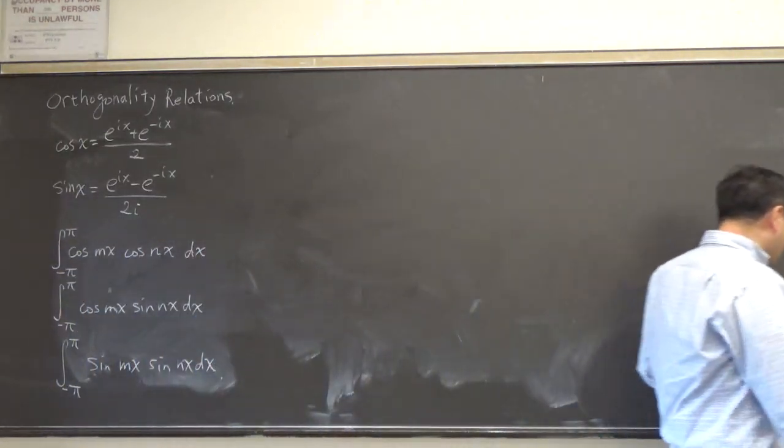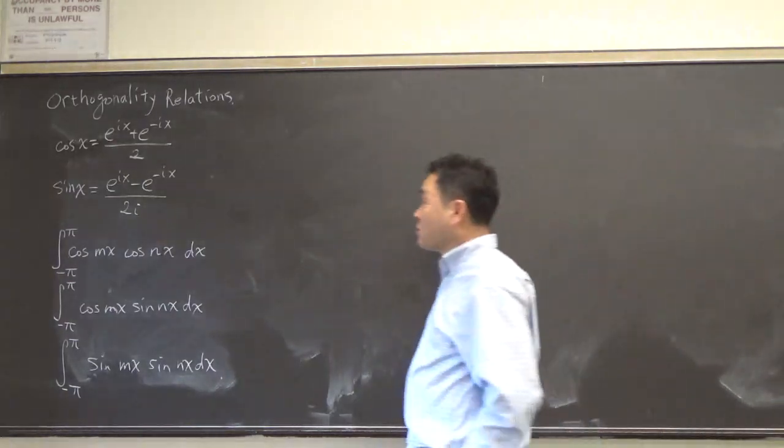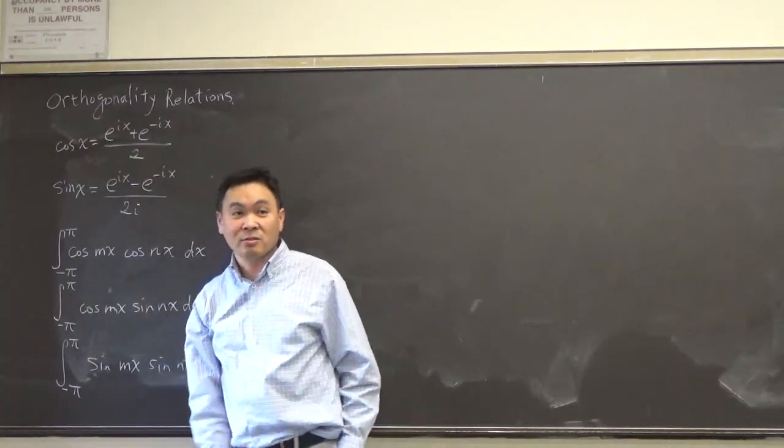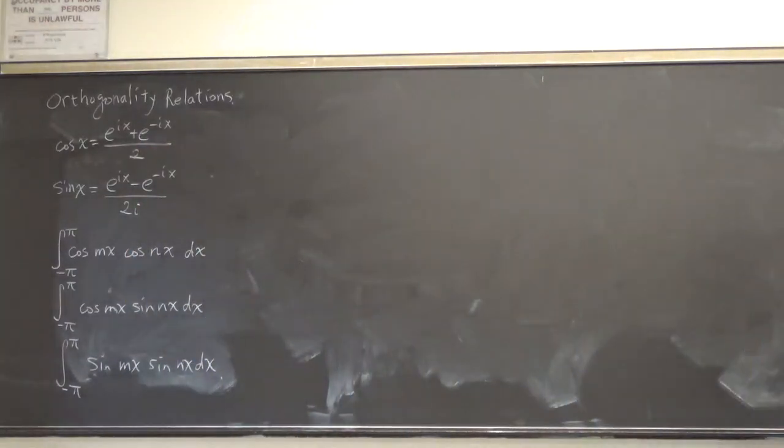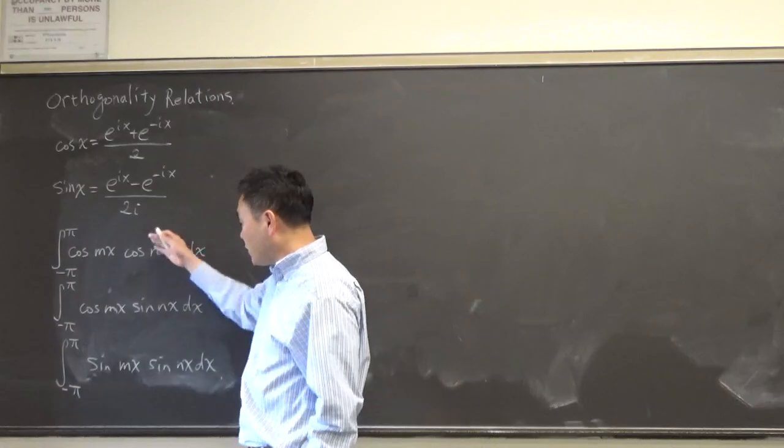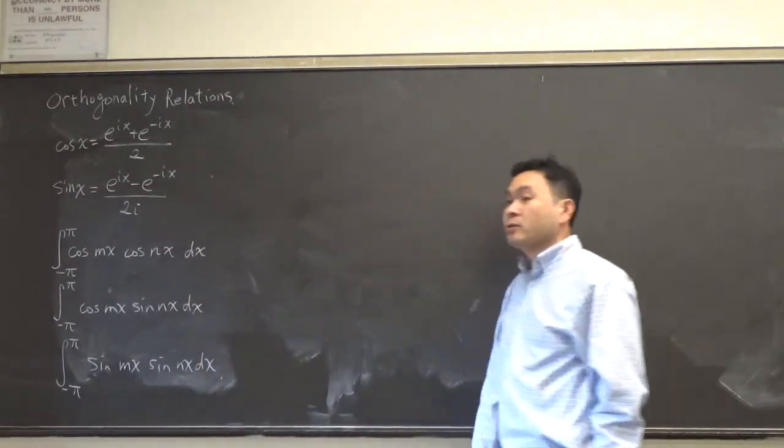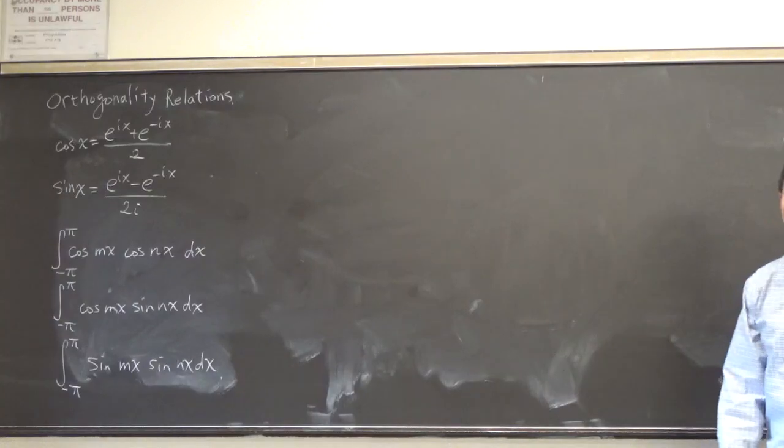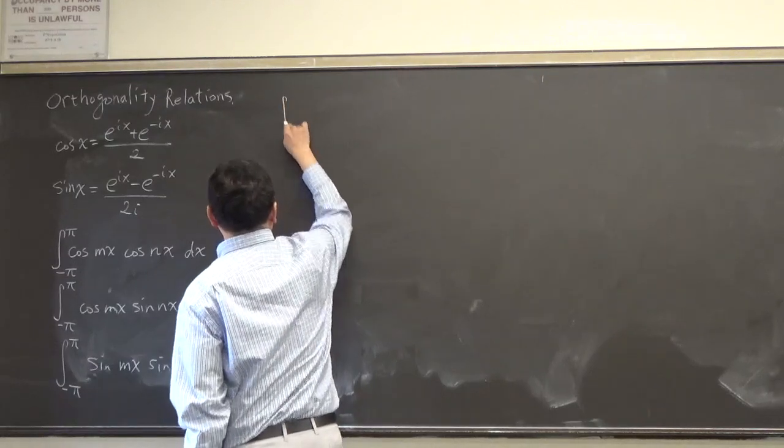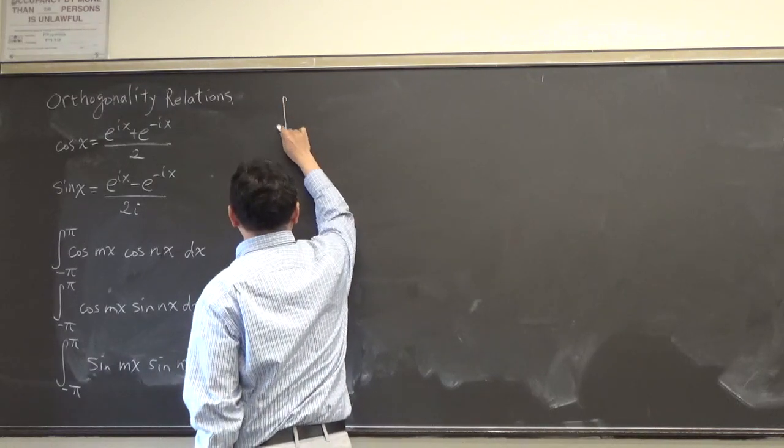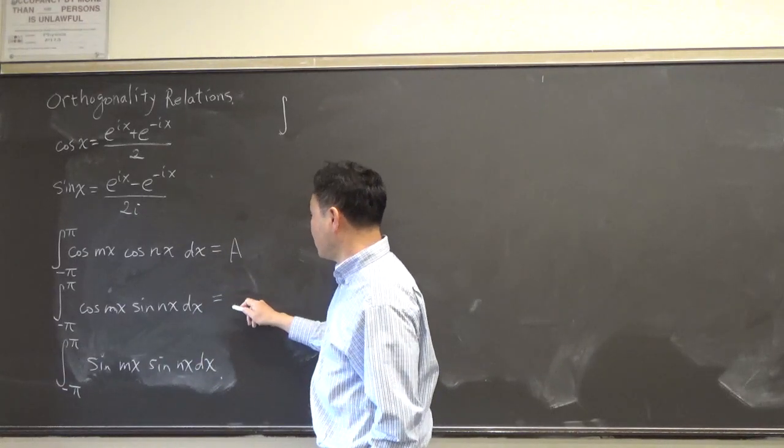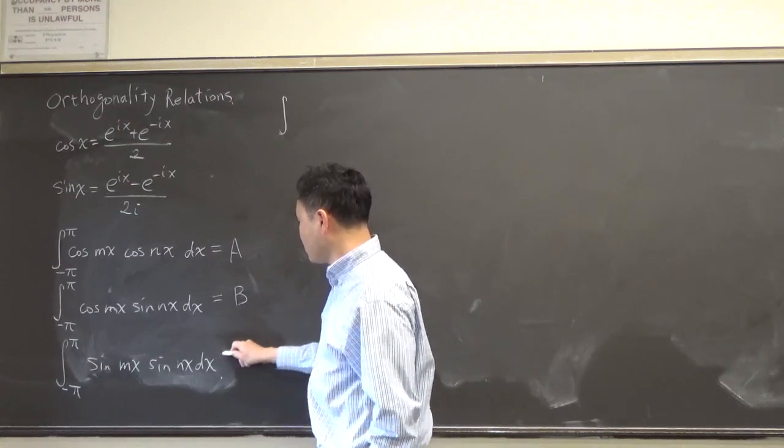But since we just covered the Euler identity and its consequences, that cosine x is this and sine x is this, we want to use it to evaluate these three integrals. So let's try that. And here's the idea. You want to integrate, so let's call this A, let's call this B, and let's call this C.